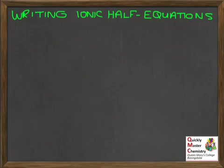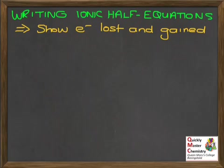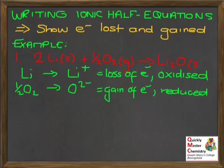We'll move on to the skill of writing ionic half equations. These are equations that show, separately, the electrons being lost and the electrons being gained in a redox reaction. We'll use the example of lithium reacting with oxygen to make lithium oxide. The lithium goes from the atom Li to a lithium 1+ ion — loss of electrons, oxidation. The oxygen goes from the oxygen atom in O₂ to an oxide ion O²⁻ — gain of electrons.